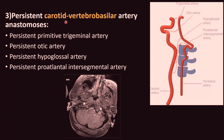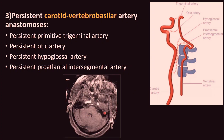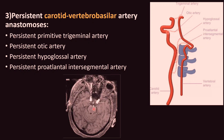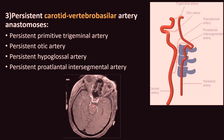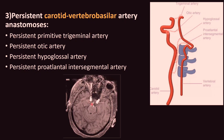Persistent carotid vertebrobasilar artery anastomoses include: the persistent primitive trigeminal artery, arising from the junction of the petrous and cavernous ICA and running posterolaterally along the trigeminal nerve; the persistent otic artery, arising from the C2 petrous segment within the carotid canal and joining the basilar artery; the persistent hypoglossal artery, arising from the distal ICA and joining the vertebral artery; and the persistent pro-atlantal intersegmental artery. An MR TOF video shows communication between the ICA and basilar artery via a persistent trigeminal artery, which should not be considered anomalous.